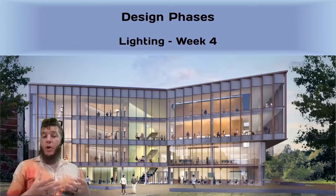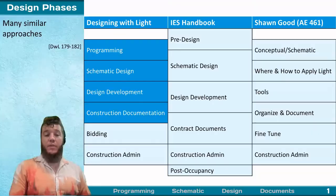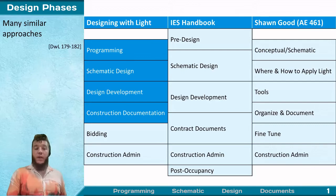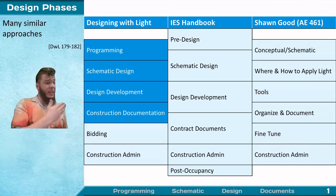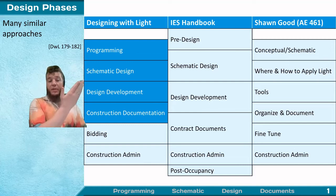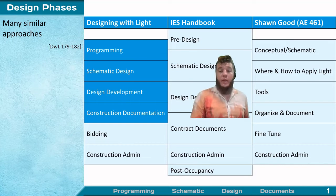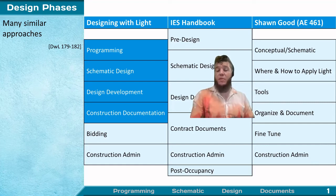Moving on to design phases — the backbone of how we work through any lighting design project. My preferred four phases are: programming, schematic design, design development, and construction documentation. Related terminology systems from other practitioners (such as Sean Goode's series) are not in disagreement — it's good to know how they tie together.